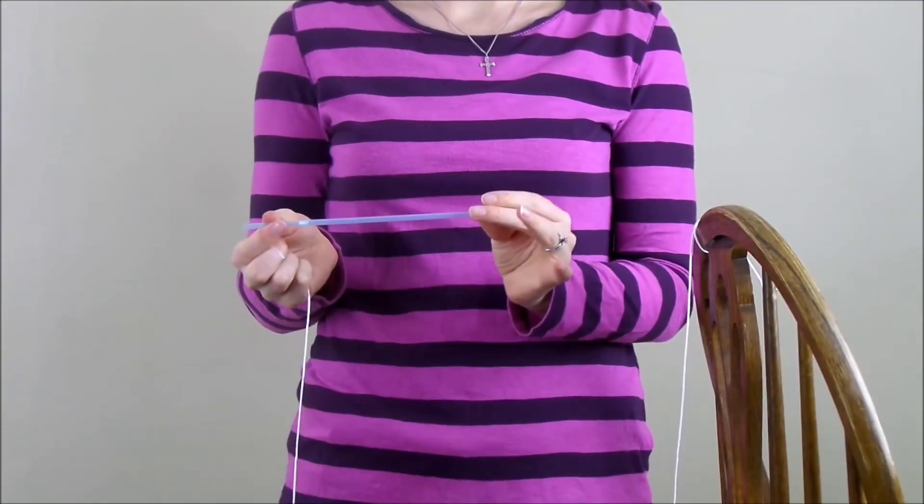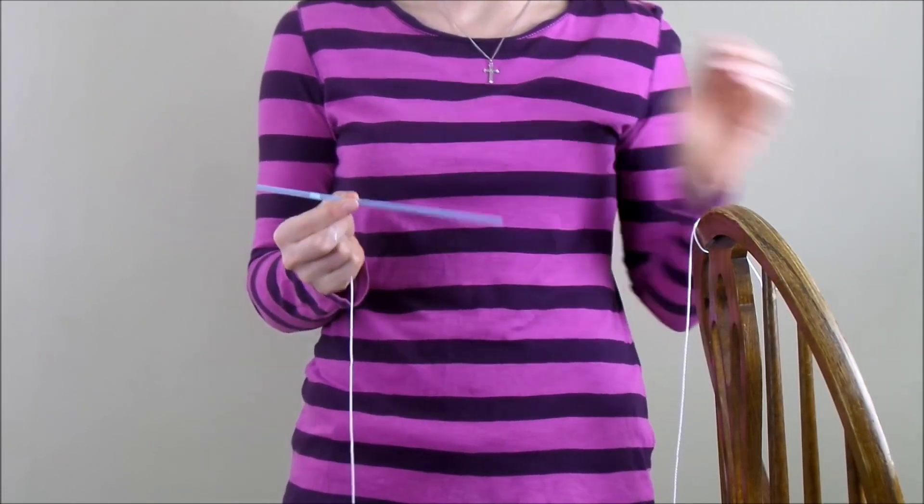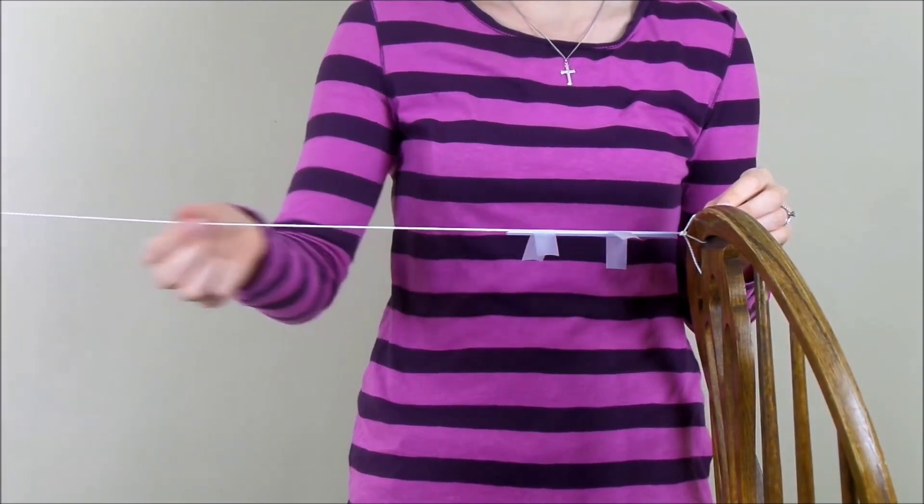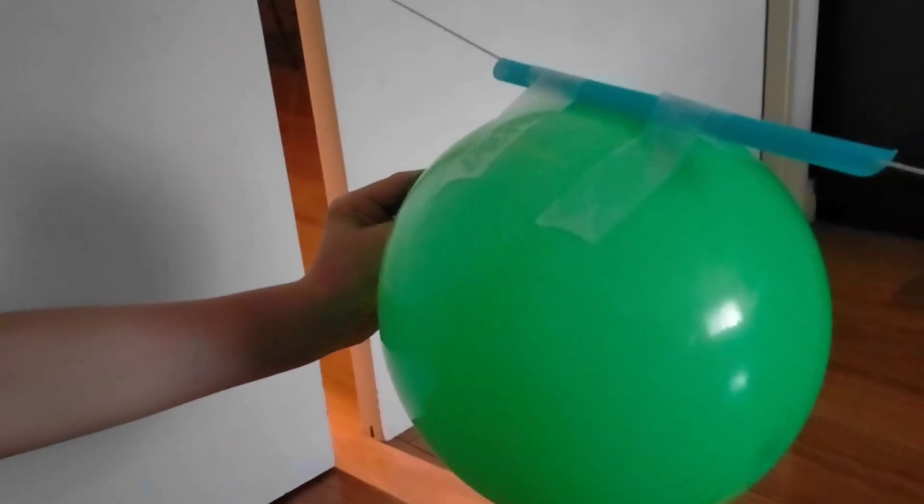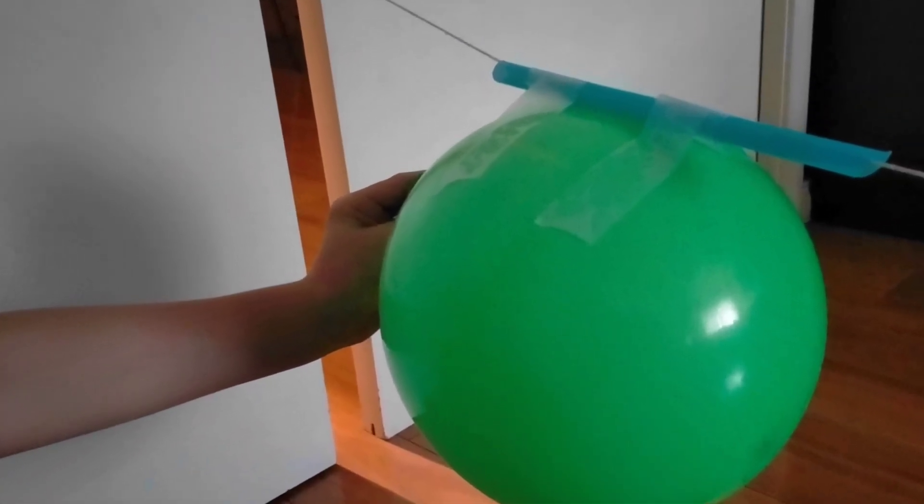First, tie the string between the two chairs, making sure it is taut and secure. Next, thread the drinking straw onto the string so that it can slide back and forth freely. Inflate the balloon and tape it to the straw. Now, hold the balloon and pull it to one end of the string, and then let go.